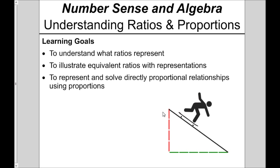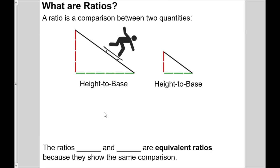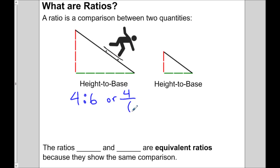We're going to start with an example of a skateboard ramp. A ratio is a comparison between two quantities. We're going to look at the ratio of the height to the base for this big ramp. The height has four sticks and the base has six sticks. So we can write a height to base ratio of four to six using a colon, or we can write it as a fraction four over six.